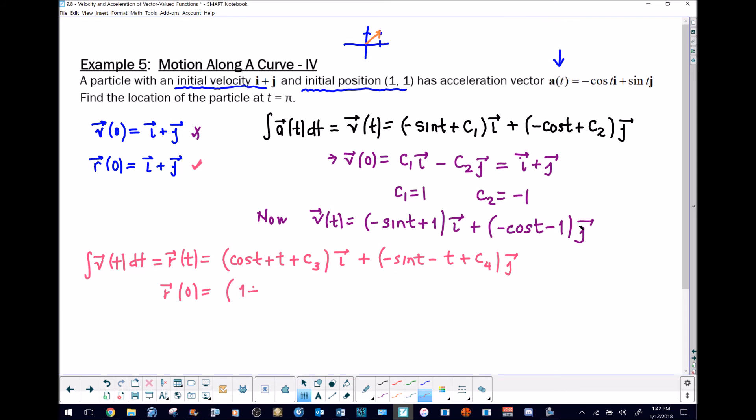With this other portion, all we have remaining is c4 times j, since sine of t and t both become zero. This is equivalent to i plus j. The corresponding components are equivalent, so one plus c3 is one, c4 equals one. That forces c3 to be zero.